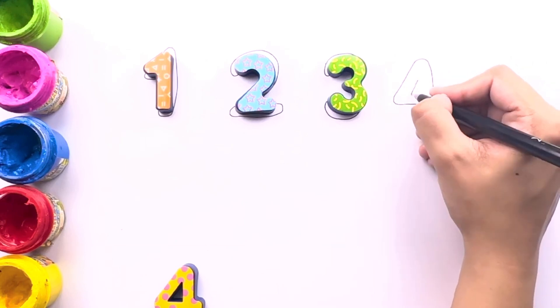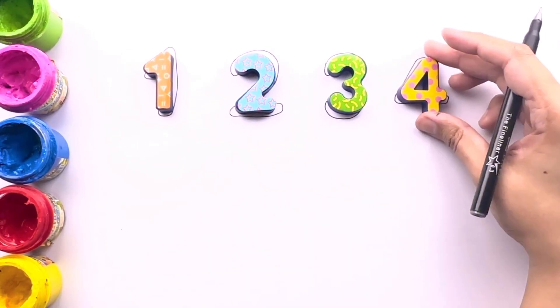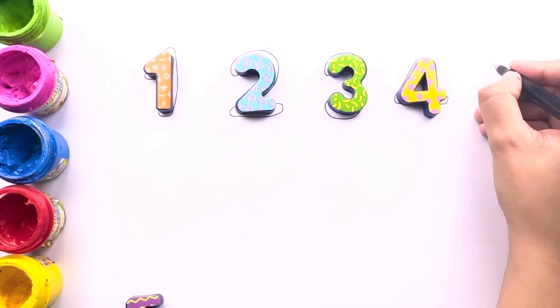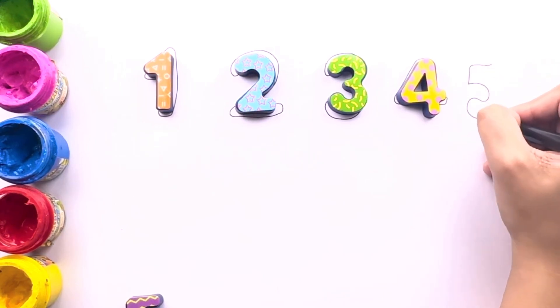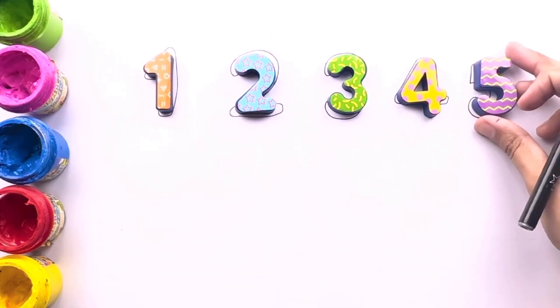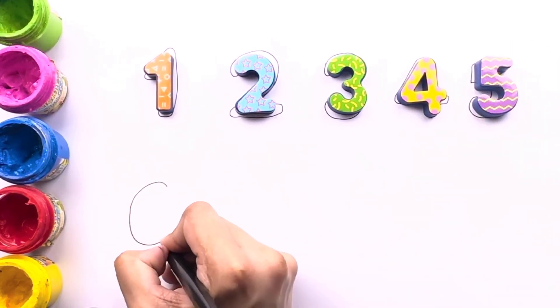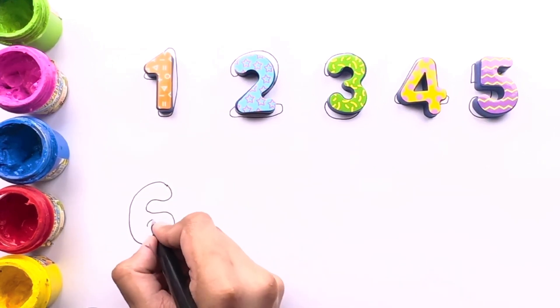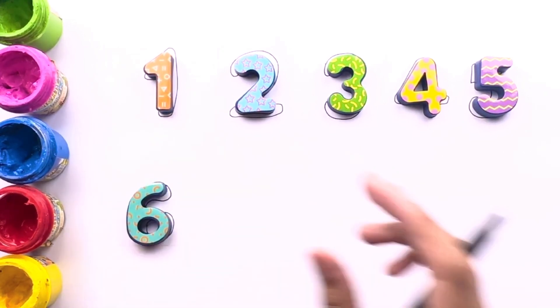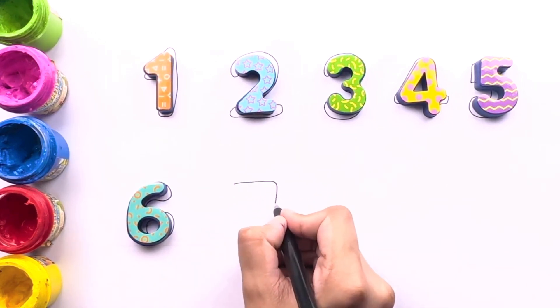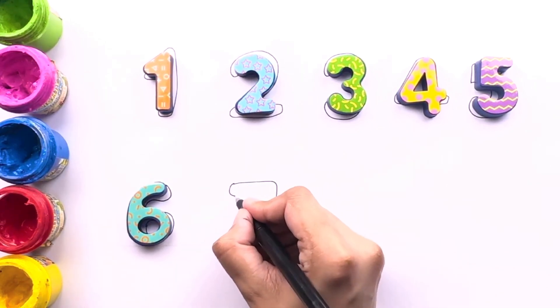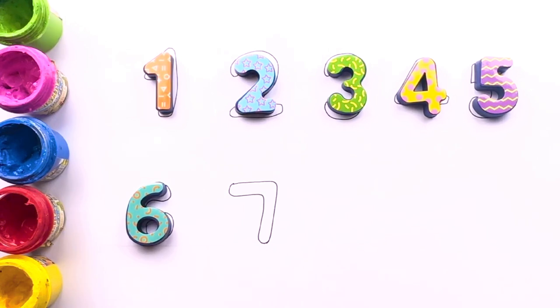Skip to my loo, loo, loo, skip to my loo, loo, skip to my loo, skip to my loo, skip to my loo, my darling. Little red wagon painted blue, little red wagon painted blue, little red wagon painted blue, skip to my loo, my darling. We are drawing number six. Skip to my loo, loo, skip to my loo, skip to my loo, my darling. Number 7.